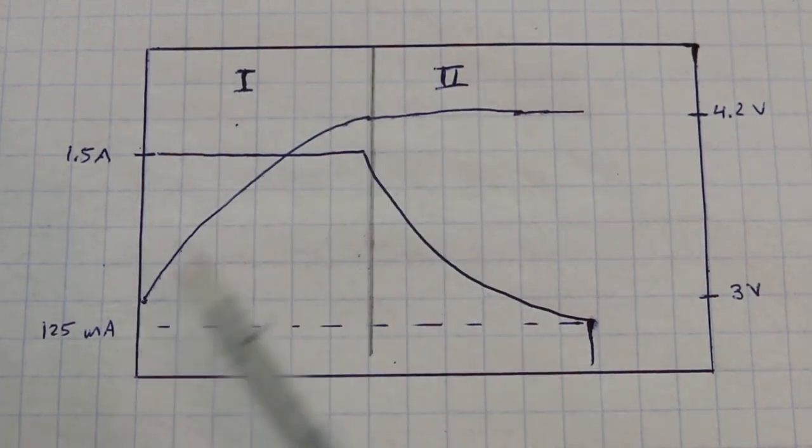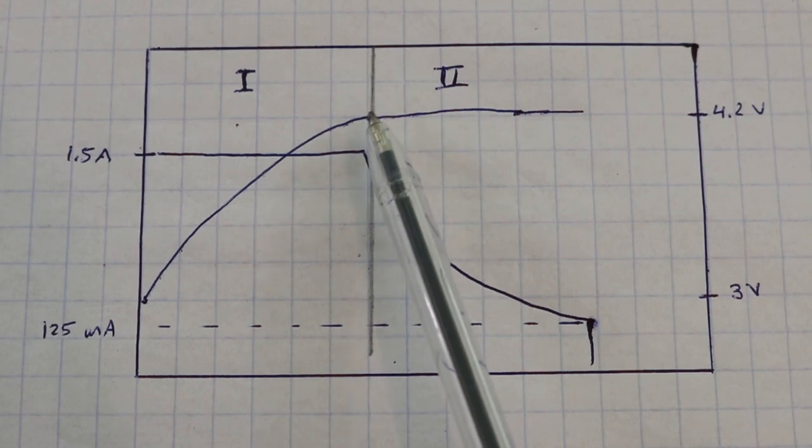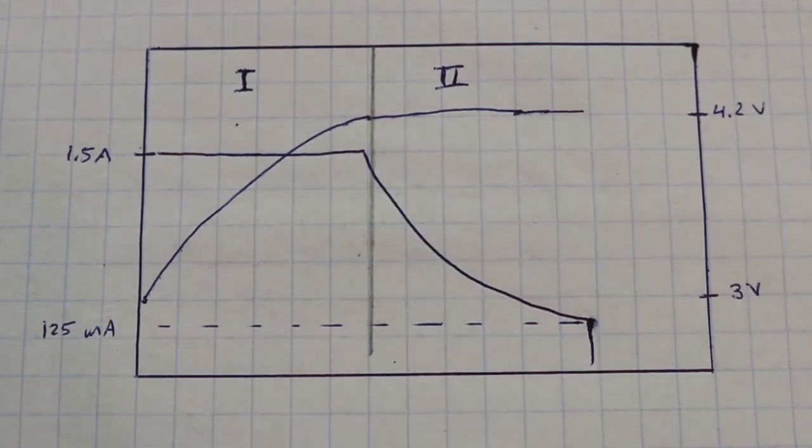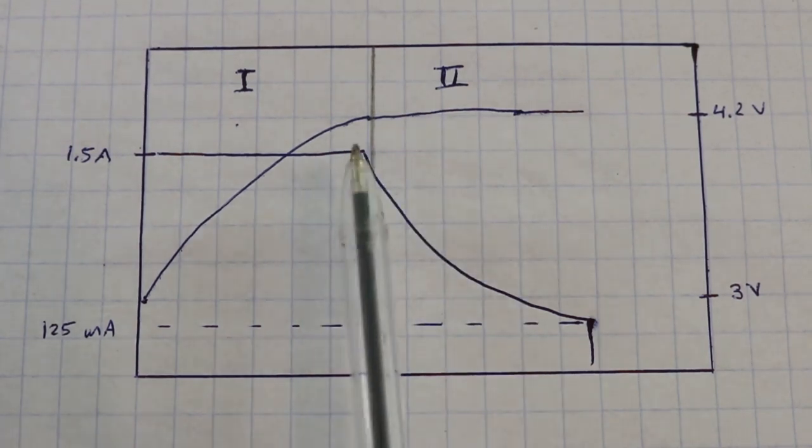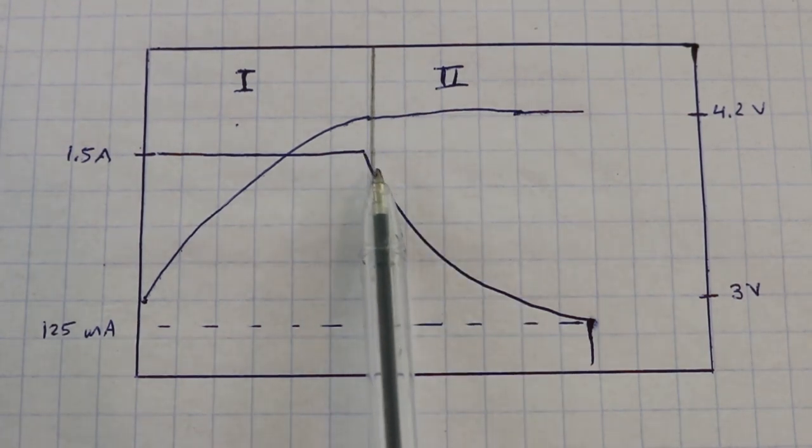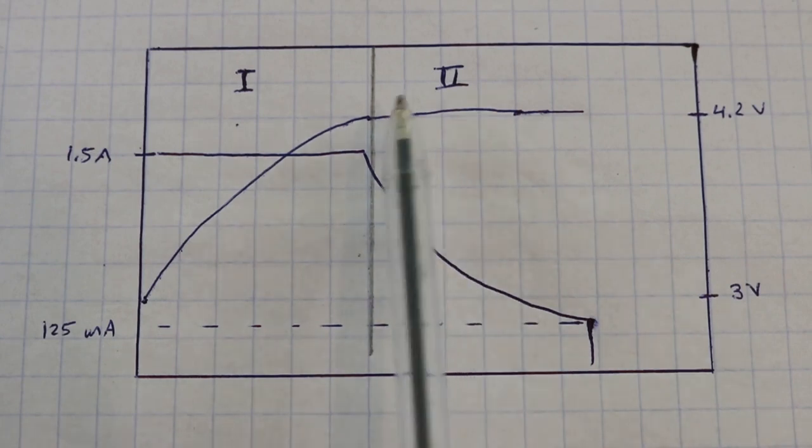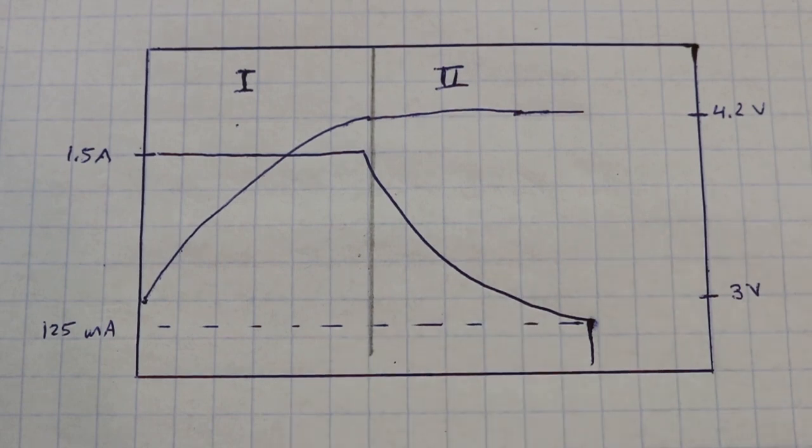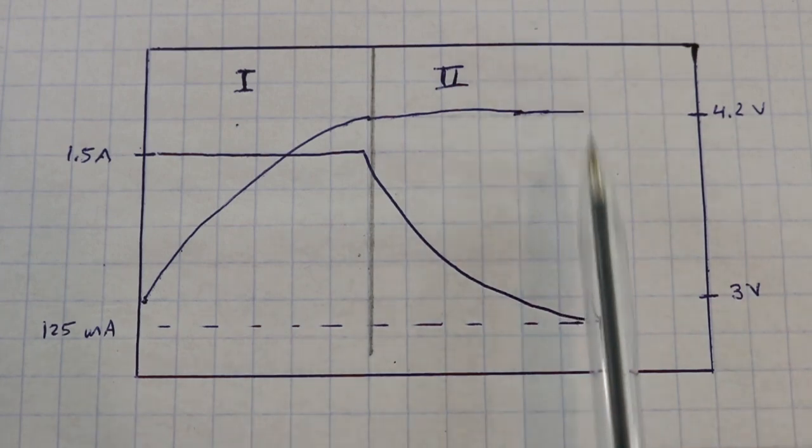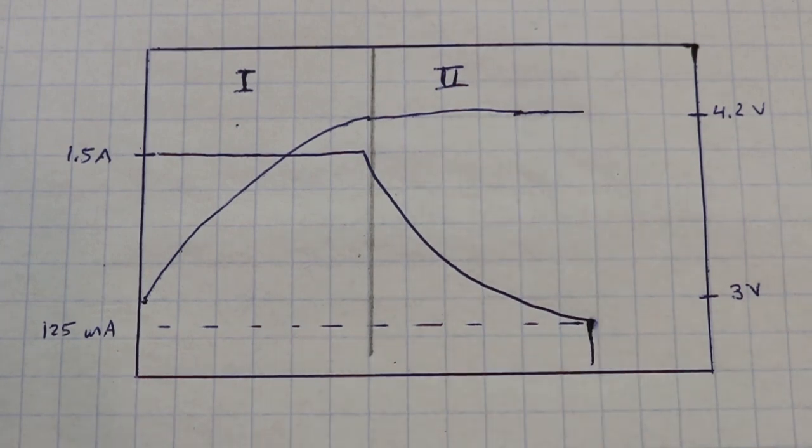When the voltage of the battery is 4.2 volts we must fix the voltage at that value and then the current will start to decrease. Constant voltage, current decreasing. When the current reaches the cutoff value, according to the data sheet is 125 milliamps, at this point the stage 2 ends and our battery is fully charged.